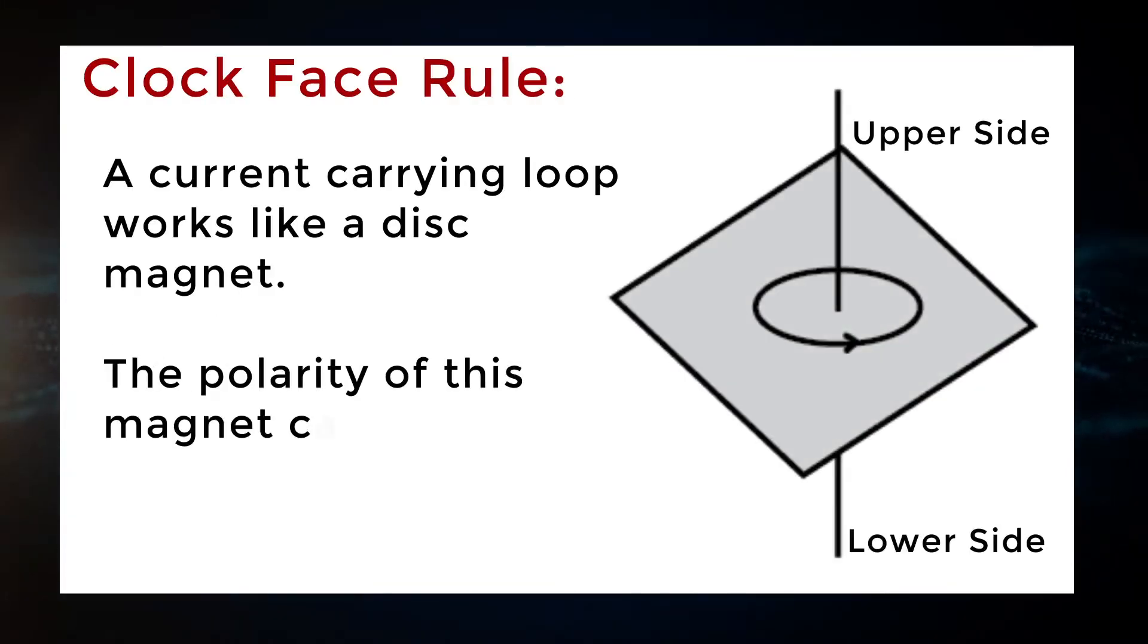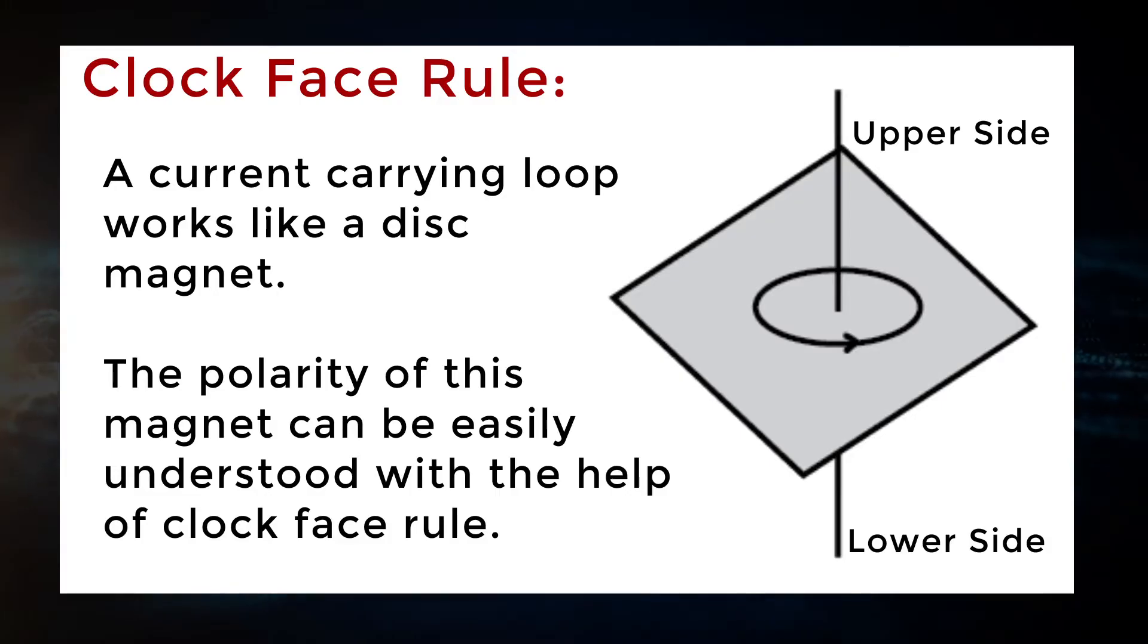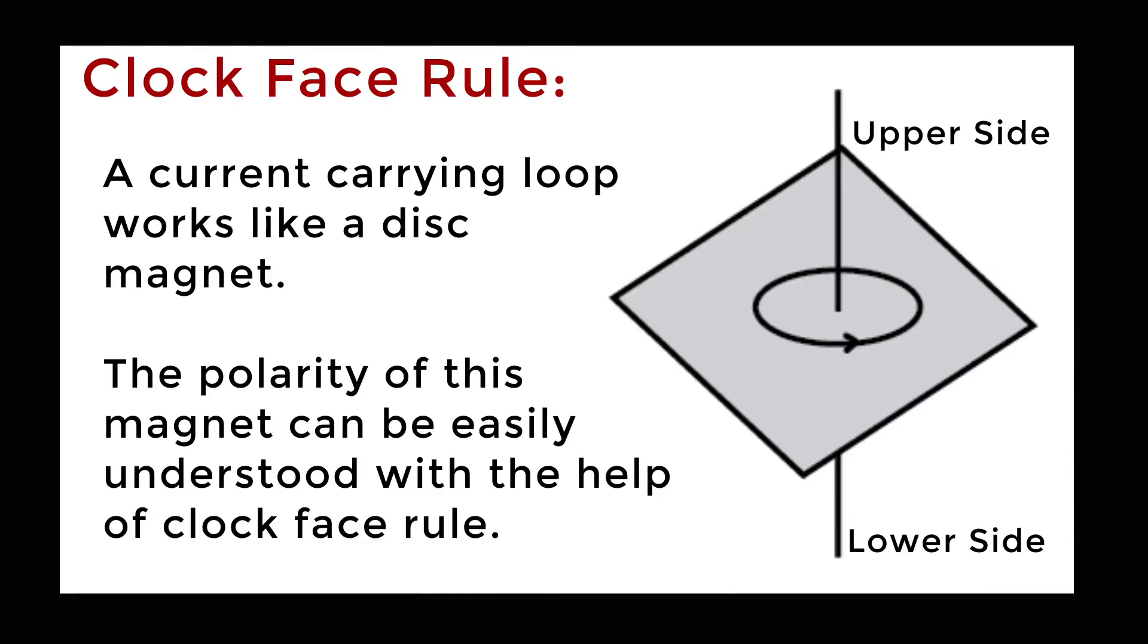Clock face rule. A current carrying loop works like a disk magnet. The polarity of this magnet can be easily understood with the help of clock face rule.